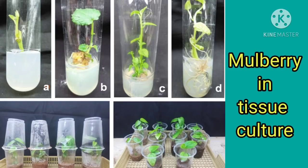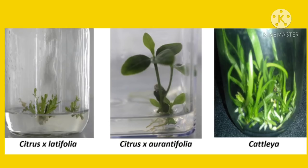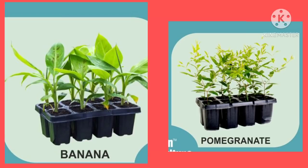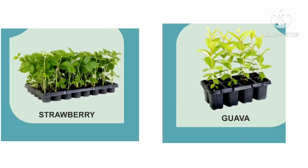Tissue culture is applied to many plants including Citrus latifolia, Citrus aurantifolia, Cattleya, Daucus carota (carrot), Carica papaya, Mentha piperita (mint plant), banana, pomegranate, strawberry, guava, and others.